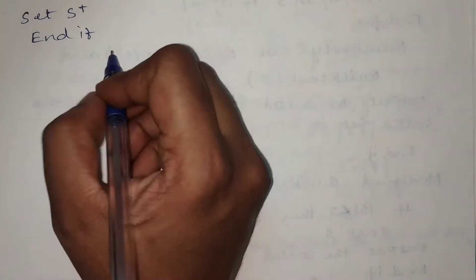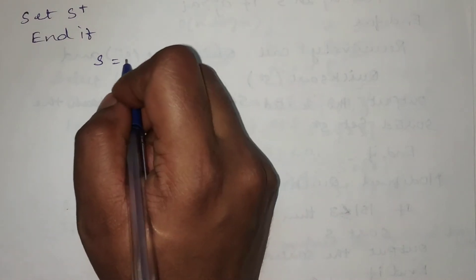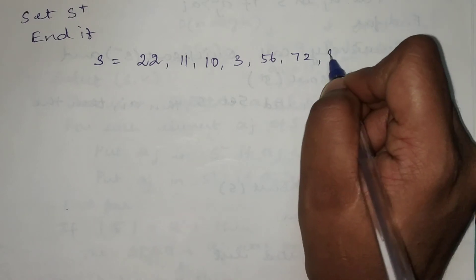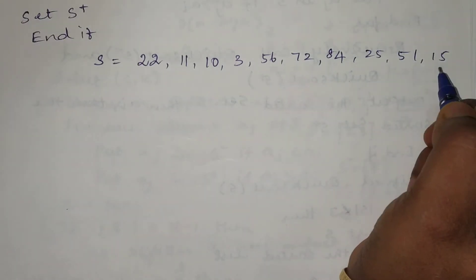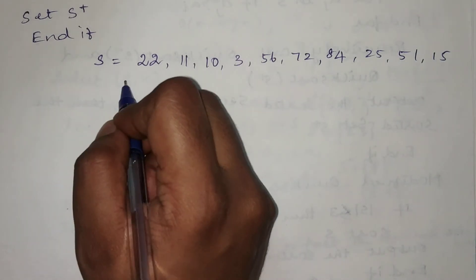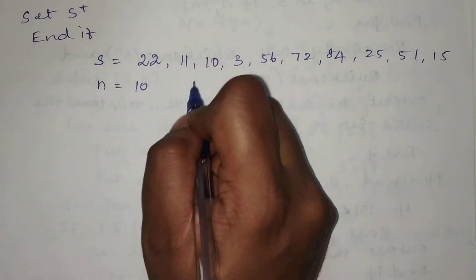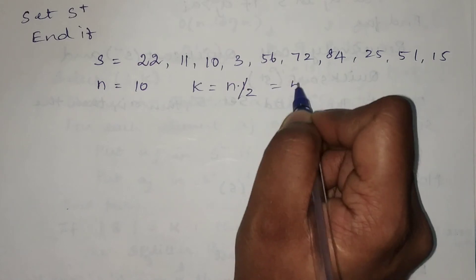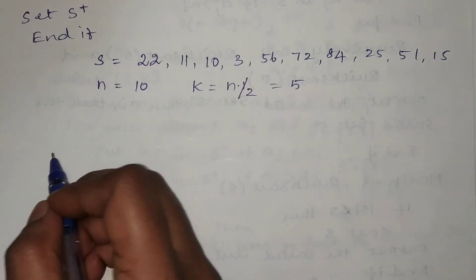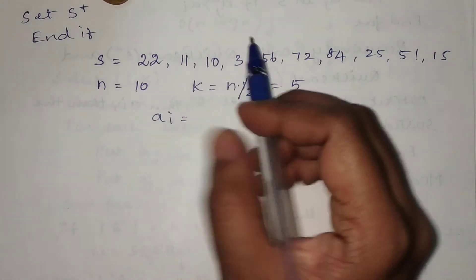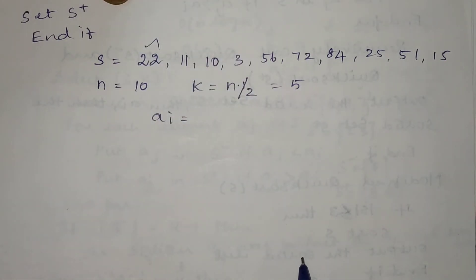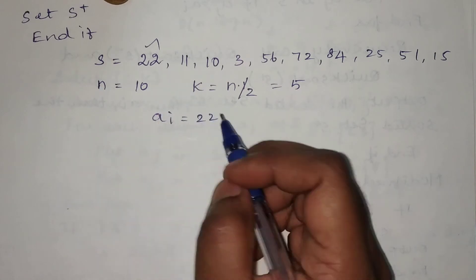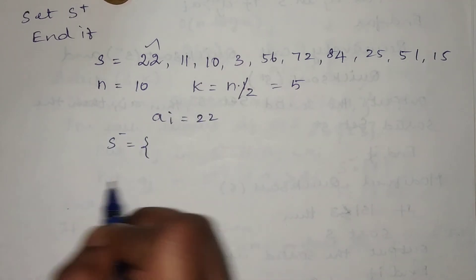Let us see an example. S = {22, 11, 10, 3, 56, 72, 84, 25, 51, 15}. The total number of elements n = 10. Since n is even, we compute n/4 = 10/4 = 2.5, effectively 2, and n/2 = 5. We pick a pivot element ai randomly — suppose we select 22 (the first element, at index 0).